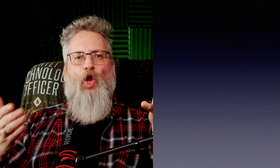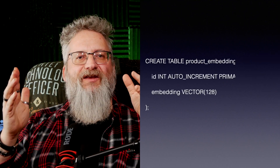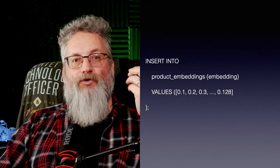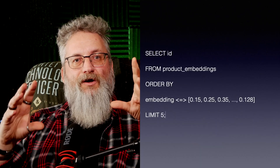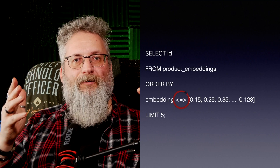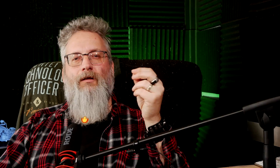Here's how you can start using the vector data type in MariaDB. Step one: define your table. Create a table with a vector column — vector(128) means each vector will have 128 dimensions. Step two: insert some data. You can insert vectors directly. Step three: run a similarity search. The real magic happens with approximate nearest neighbor searches. The cosine distance operator finds the vectors closest to your target.